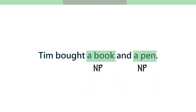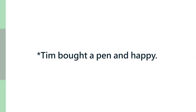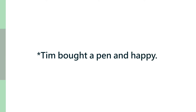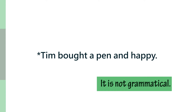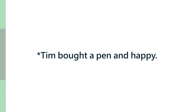If I say 'Tim bought a pen and happy,' 'happy' is an adjective, and you can't coordinate them because 'a pen' is a noun phrase and 'happy' is an adjective phrase. So the sentence sounds odd and is ungrammatical — because coordination was not performed properly.